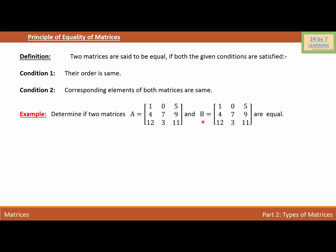In the same way, matrix B is also 3 by 3. So we can say order of matrix A is equal to order of matrix B, which is equal to 3 by 3.